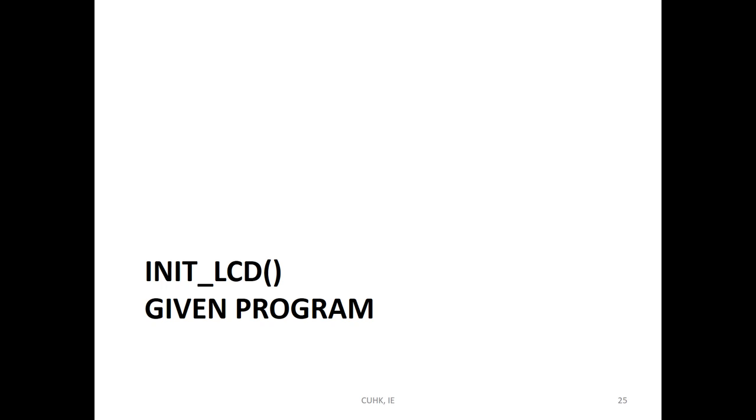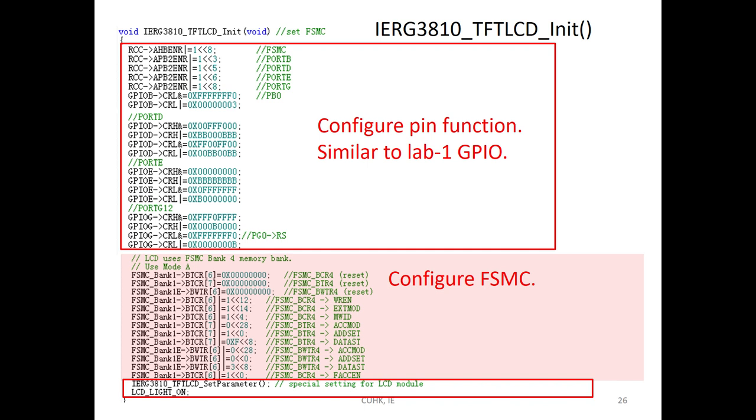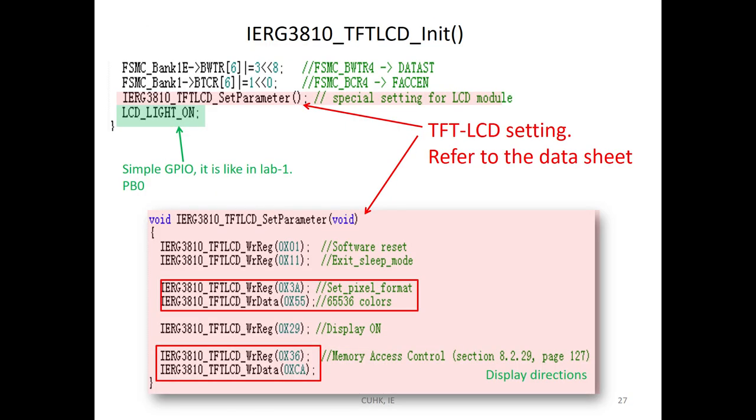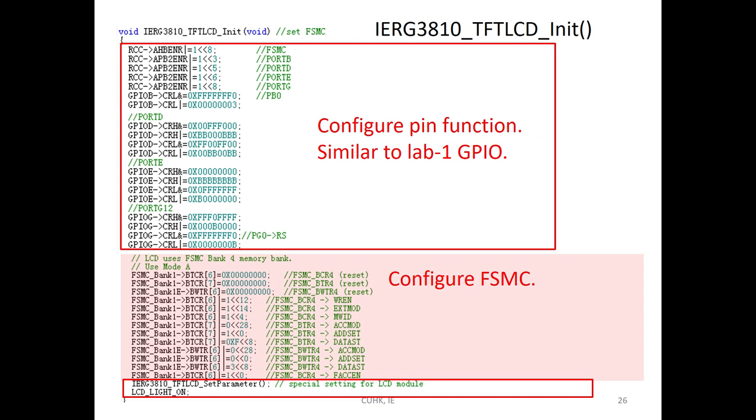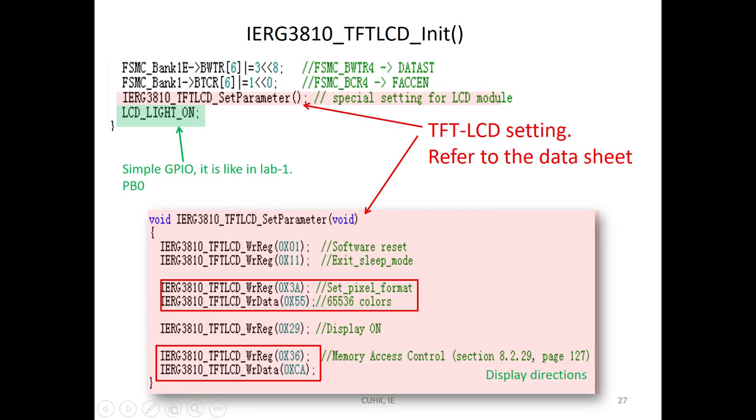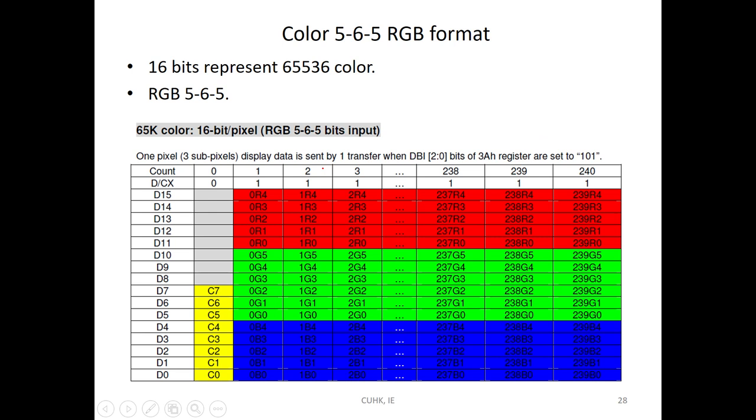We give you program to initialize the LCD. You can explain that in the report. At the end of the init program, you set parameter and turn LED light on. Set parameter and call another function, like this. And LED on just uses a GPIO to turn on the backlight. The color of the LCD uses 16-bit, two bytes for one color. Because human eye is sensitive to green color, so it uses 6-bit depth to present the green color. So we will call this method RGB 565 color.